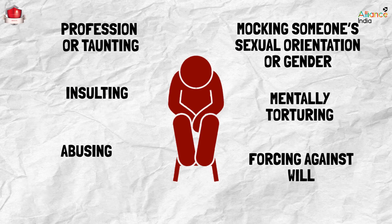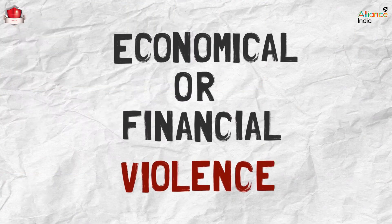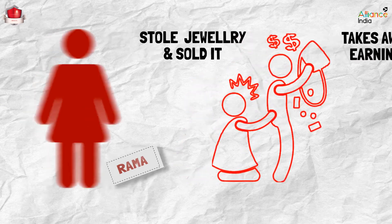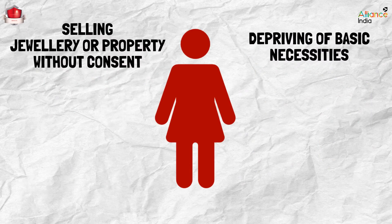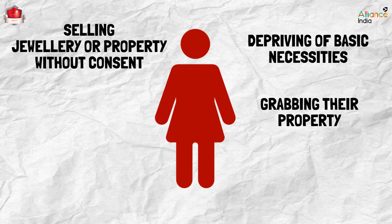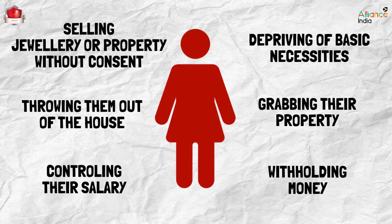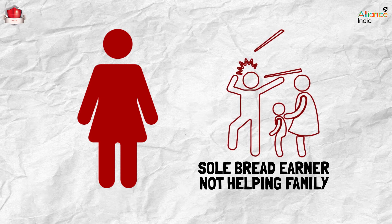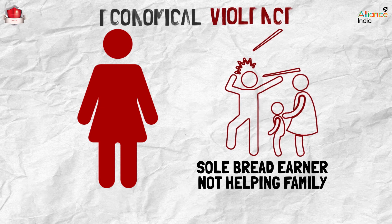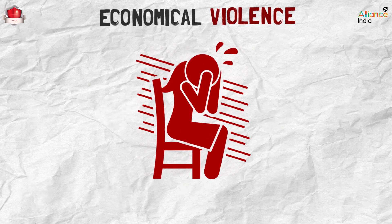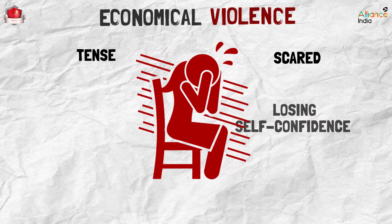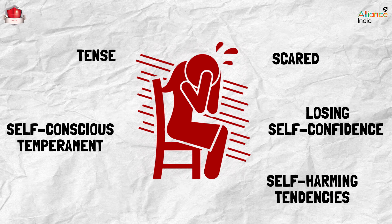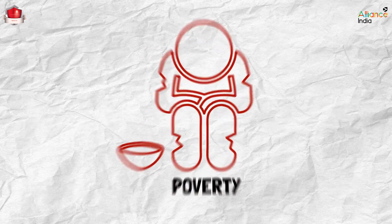The fourth type of violence is economic or financial violence. Remember Rama — her husband stole her jewelry and sold it, and he also takes away whatever little she earns. Depriving a person of basic necessities, selling their jewelry or property without consent, grabbing their property, throwing them out of the house, withholding money, controlling their salary, not giving money to meet family needs, or not providing for basic needs of a dependent family or partner — all these are examples of economic violence. Like Rama, if someone is facing economic violence, they will seem scared and tense. Over time, victims lose self-confidence and may showcase self-conscious temperament or self-harming tendencies, and the severe psychological harm pushes these victims into poverty.